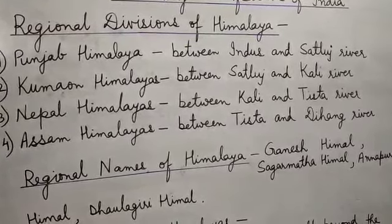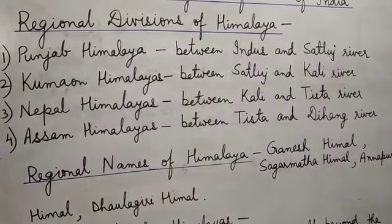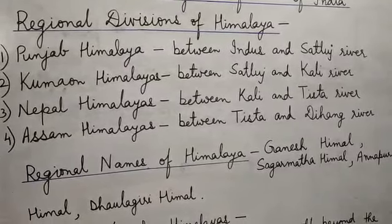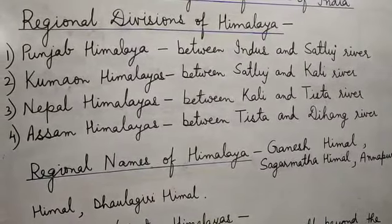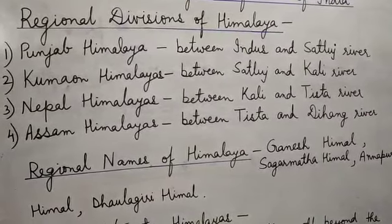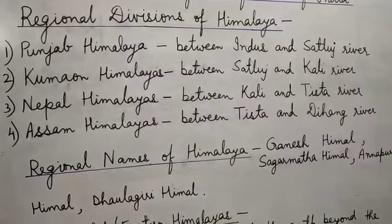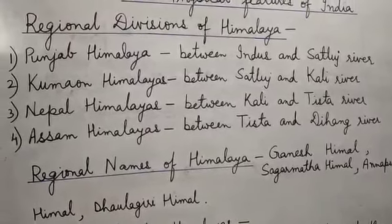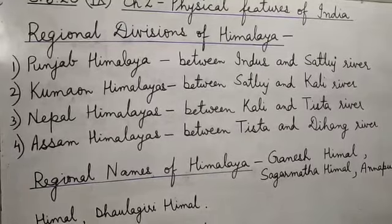In between the Great and the Lesser Himalayas there are the Kathmandu and Pokhara valleys. The Shivalik range comes very close to the Lesser Himalaya towards the east and is almost non-existent beyond the Gandak river.